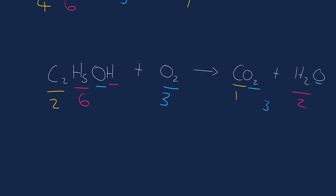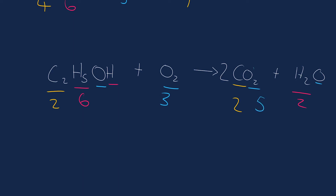We have too many carbons on the left versus the right, so let's add a two in front of CO₂. Recounting: two times one is two carbon, and two times two is four oxygen, plus one gives five oxygen in total. Carbon is now balanced. Now we need to balance hydrogen — we have six hydrogen on the left and two on the right. Let's put a three in front of H₂O: three times two means six hydrogen.